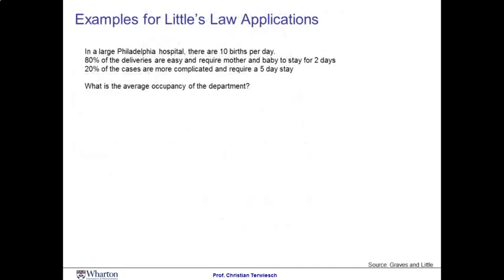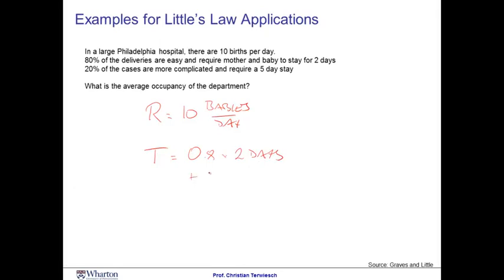Here's another interesting example of Little's Law. Imagine you're working for a large hospital, and there are ten babies born per day. Now, 80% of these deliveries are easy, and they require mother and baby to stay in the hospital for only two days. 20% of the cases are more complicated and require a five-day stay. What is the average occupancy in this department? The flow rate is ten babies per day. The flow time is the average time a baby spends in the department: with 80% probability it's two days, and with 20% probability it's five days. That is 1.6 plus 1.0, equals 2.6 days.